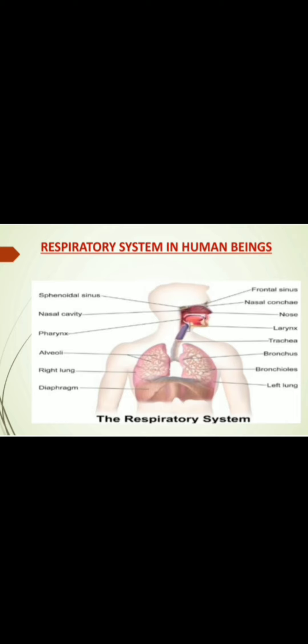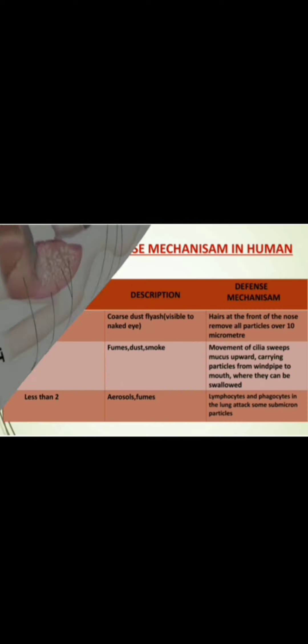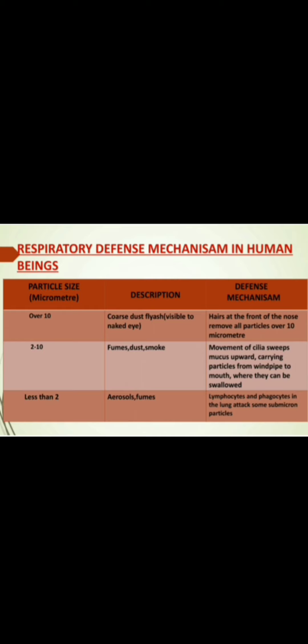Next, the respiratory system. Human beings have a respiratory system consisting of a network of organs and tissues. Next, Respiratory Defense Mechanism in Human Beings.